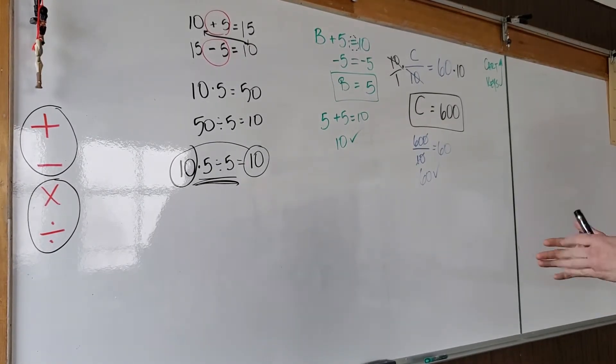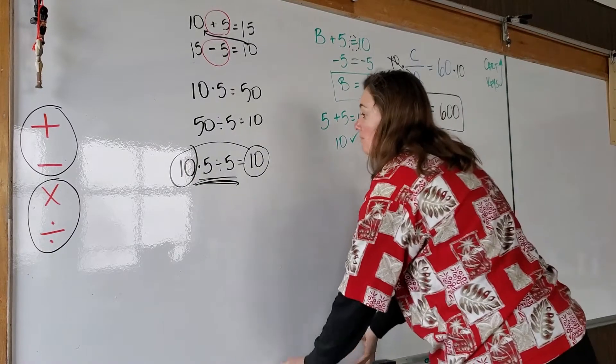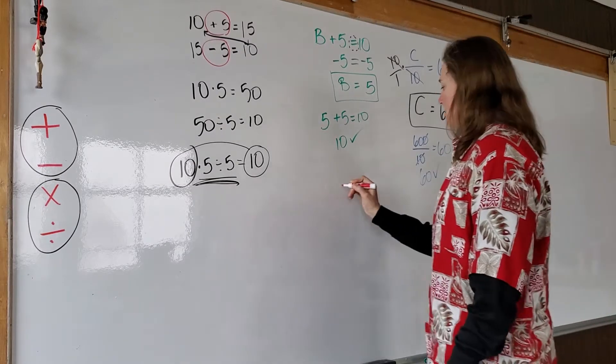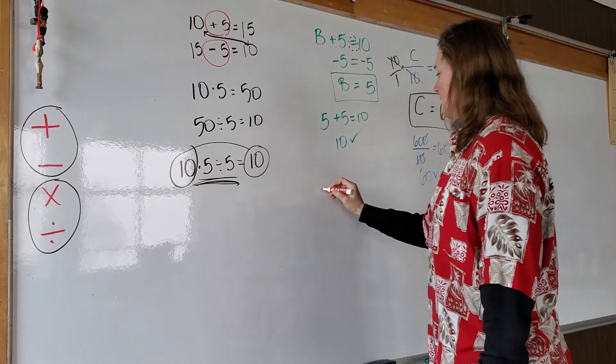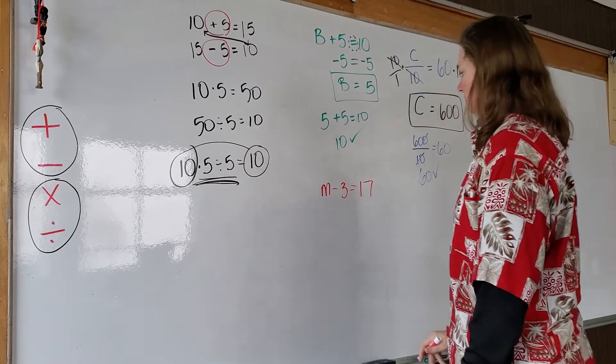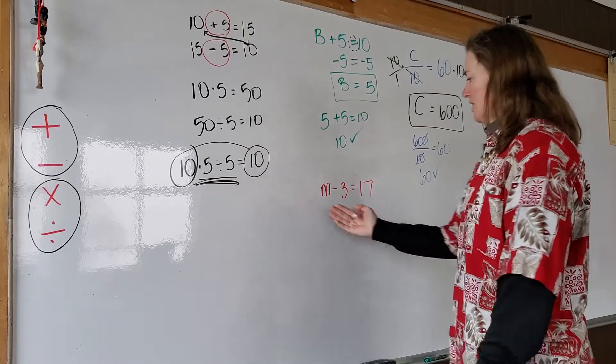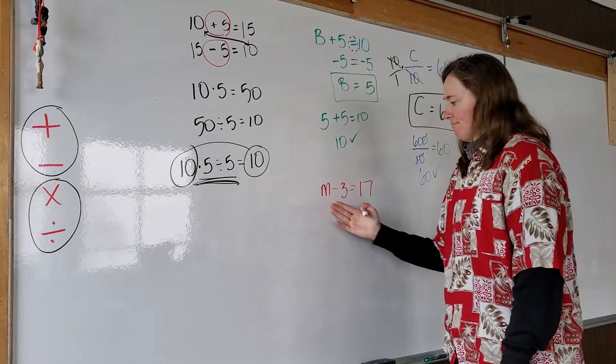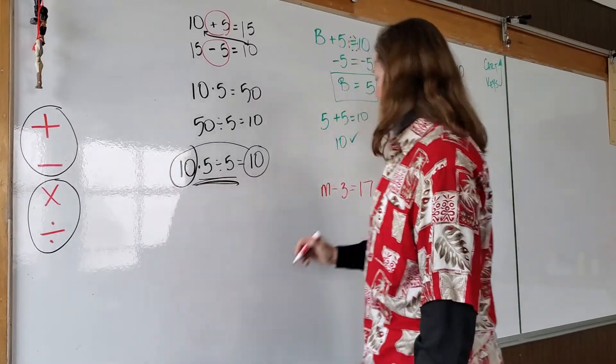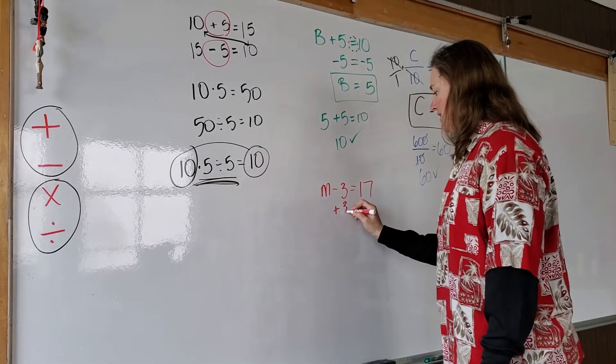Very simple part of algebra. Might be difficult because this is your first day, but we'll get it. Let's do a couple more just so we have all four operations done here. Okay. M minus 3 equals 17. Okay. Well, what's happening to the variable? To the variable, we're subtracting 3. What's the inverse of subtracting? Adding. So if we're subtracting 3, the inverse of that is add 3.